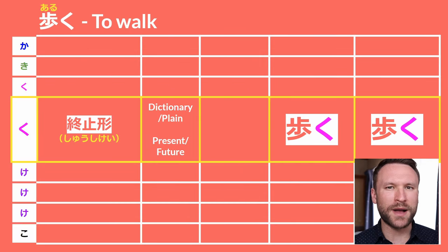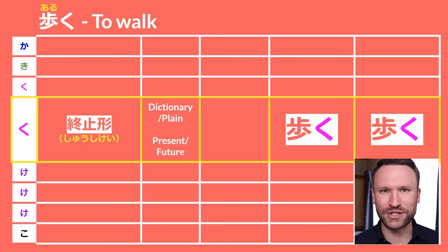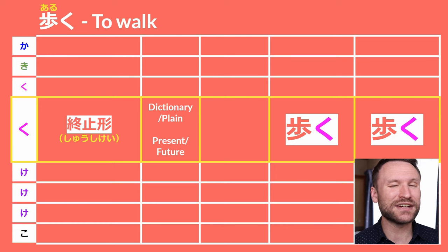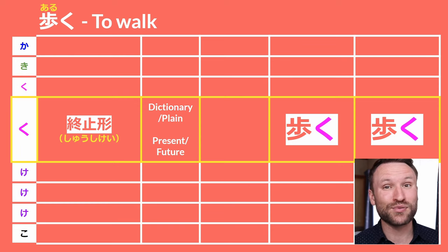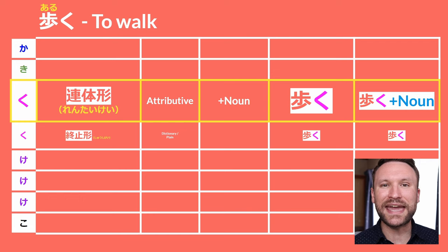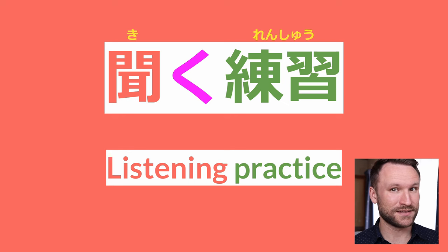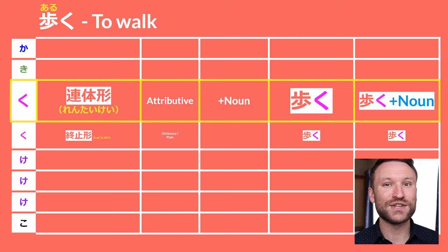Let's take the verb aruku, which means 'to walk,' and step through this godankatsuyo. Starting at the U column, we have aruku. This is the shushikei, or dictionary/plain form. If you look up a verb in a dictionary, it's always going to be in this form — the U ending. This is also the present/future tense in plain, informal Japanese. In this column, we also have rentaikei, the attributive form. It's exactly the same as the dictionary form, except you can attach it directly to any noun — for example, kikurenshu, meaning 'listening practice.'